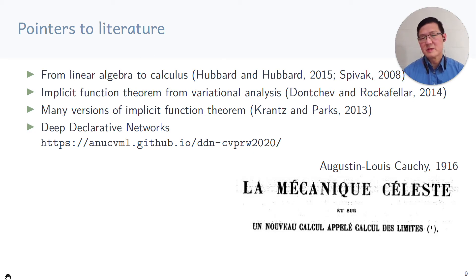In recent years, people have rediscovered the implicit function theorem by realizing that for neural networks, you can have nodes which are imperative, which tells you what to calculate, and also nodes that are declarative, which implicitly defines the gradient. And here's a link to a recent CVPR workshop.